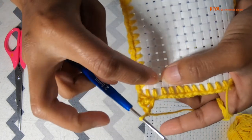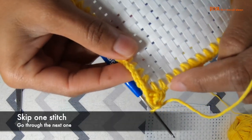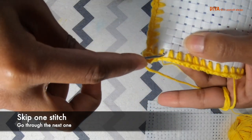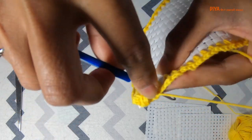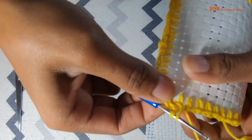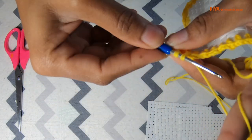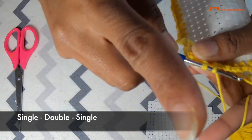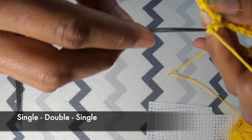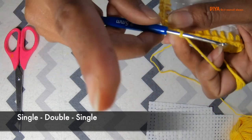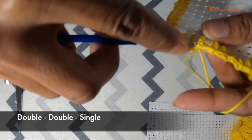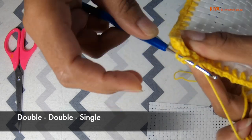So once this first shell is complete, we'll skip the next stitch and then go through the other one. Here we need to repeat the process. The first shell that we have completed, like single, double, single, and then double, double, single, and then at the same place single, double, single. This is how you need to complete all the shells, and in between you have to skip one stitch.